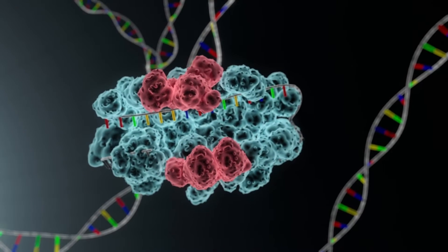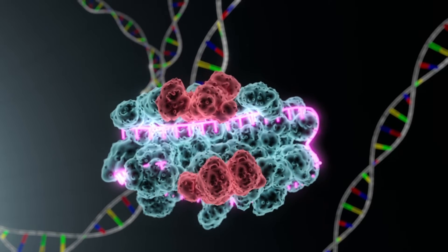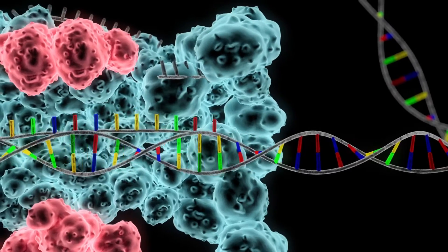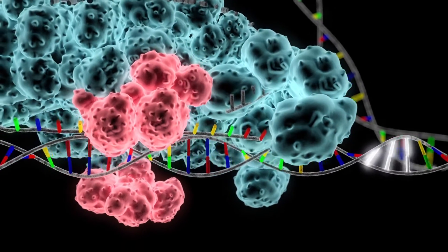For Cas9 to locate the malfunctioning DNA, it is attached to a piece of RNA called guide RNA. Once placed in the cell, this RNA-Cas9 combination locates the target DNA sequence.